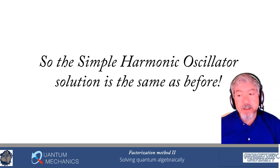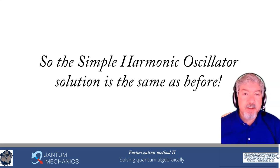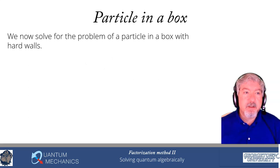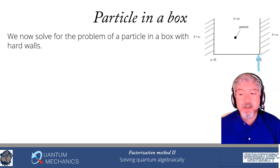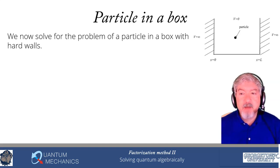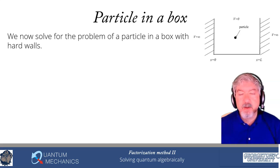We're now going to go into a second example — actually one of the harder problems, if not the hardest, we're going to solve all semester. It is the particle in a box, corresponding to a potential that's infinite outside the box and zero inside. The wave function goes to zero at the edges because it's continuous, and because the particle can never be outside the box, the boundary condition is that the wave function equals zero at both edges.